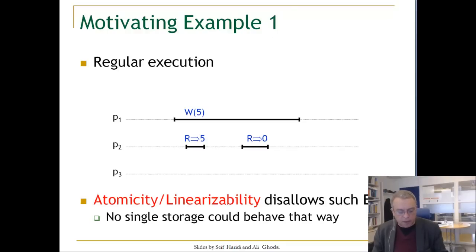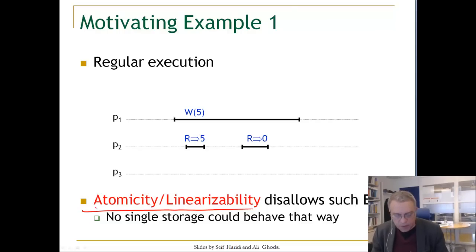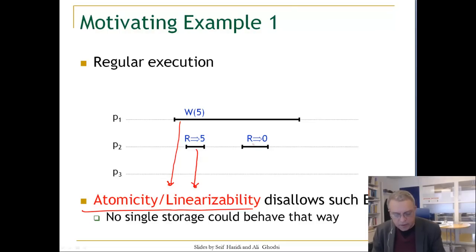Now let us look at atomicity or linearizability. Atomicity and linearizability allow executions where every operation should happen between its invocation and response, and all operations should be ordered sequentially. In this case, this execution shown here is not possible, because if a write happens, the write should happen before the read, so the read should happen somewhere here. It is not possible to later read the value zero because the last value written in this execution is five.